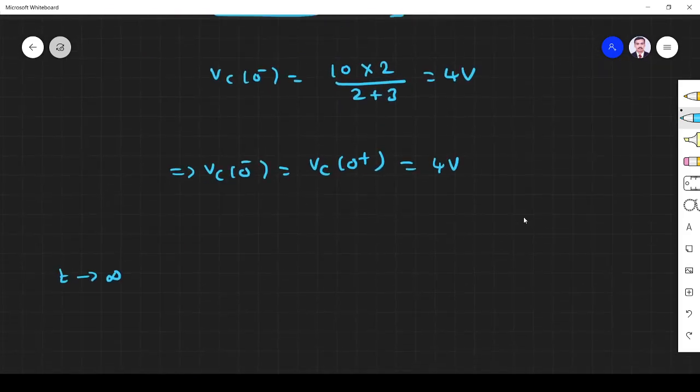Here the capacitor will be there. So what happens when the switch... Okay, now at t equals infinity, the circuit will be like this.